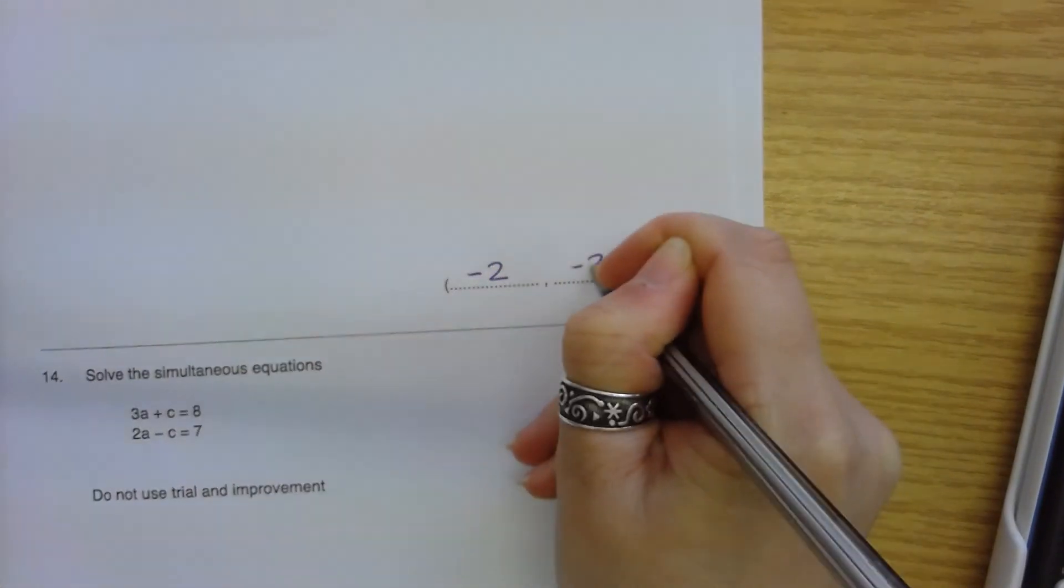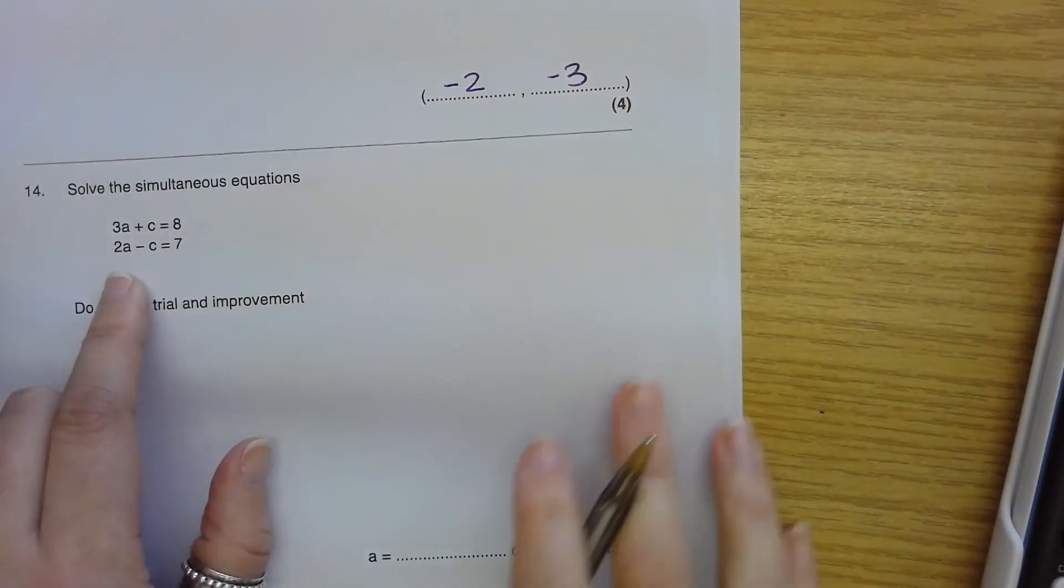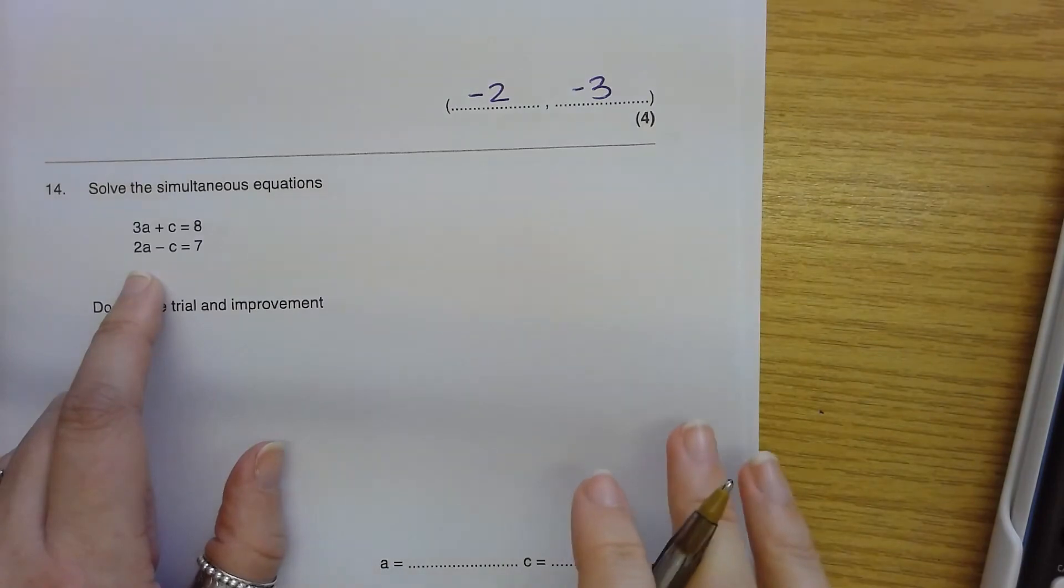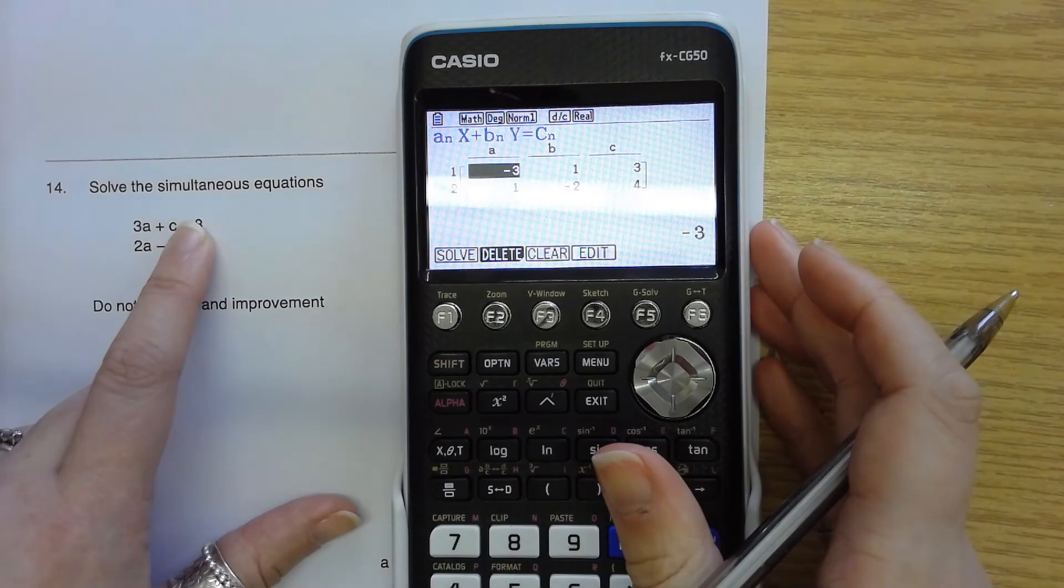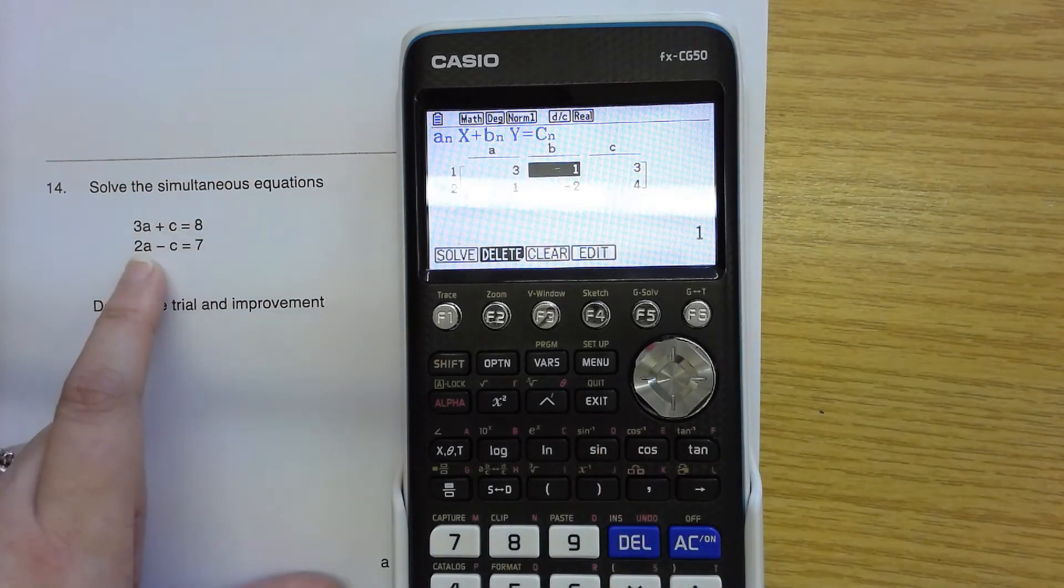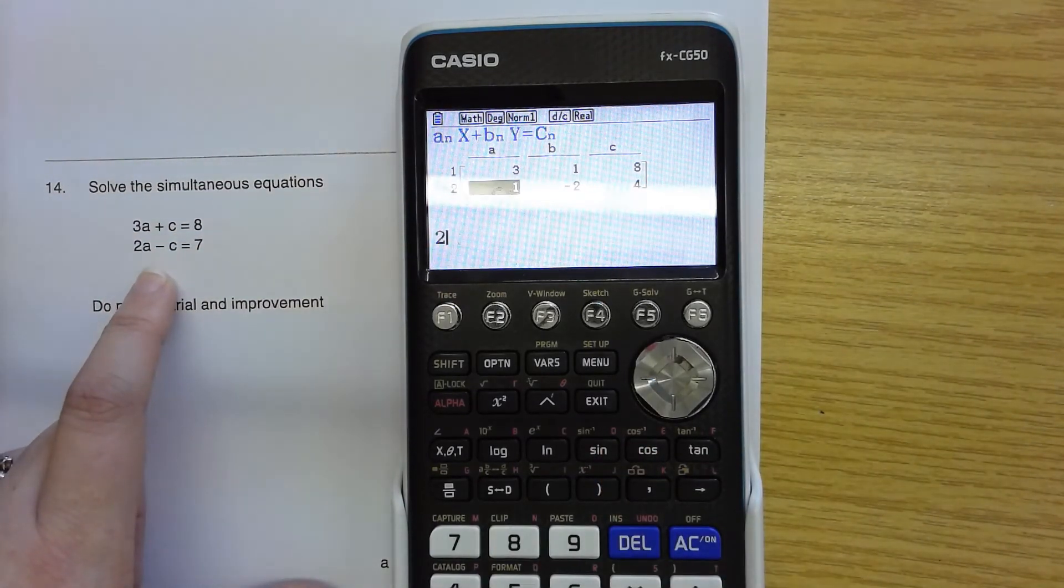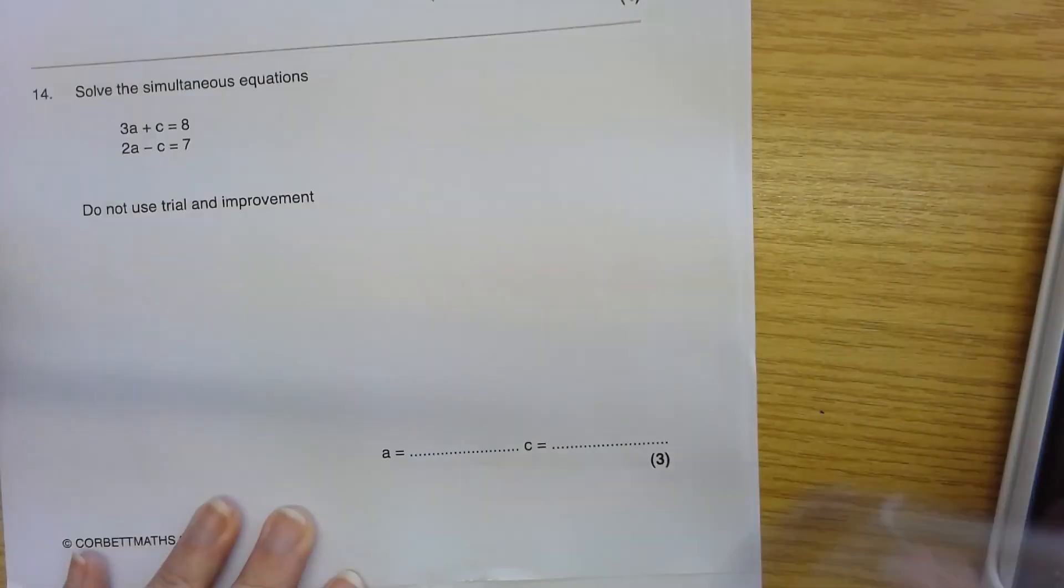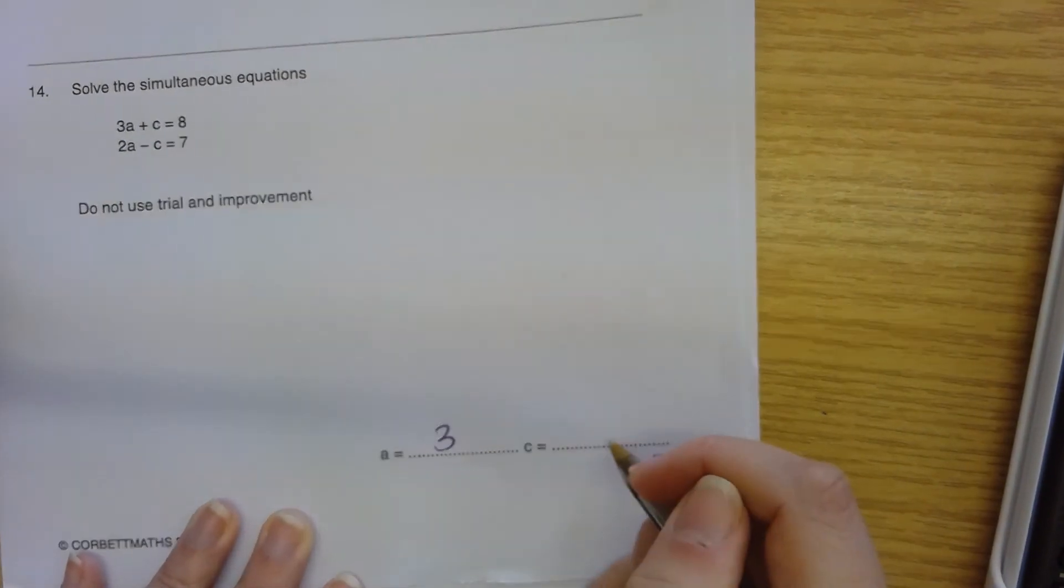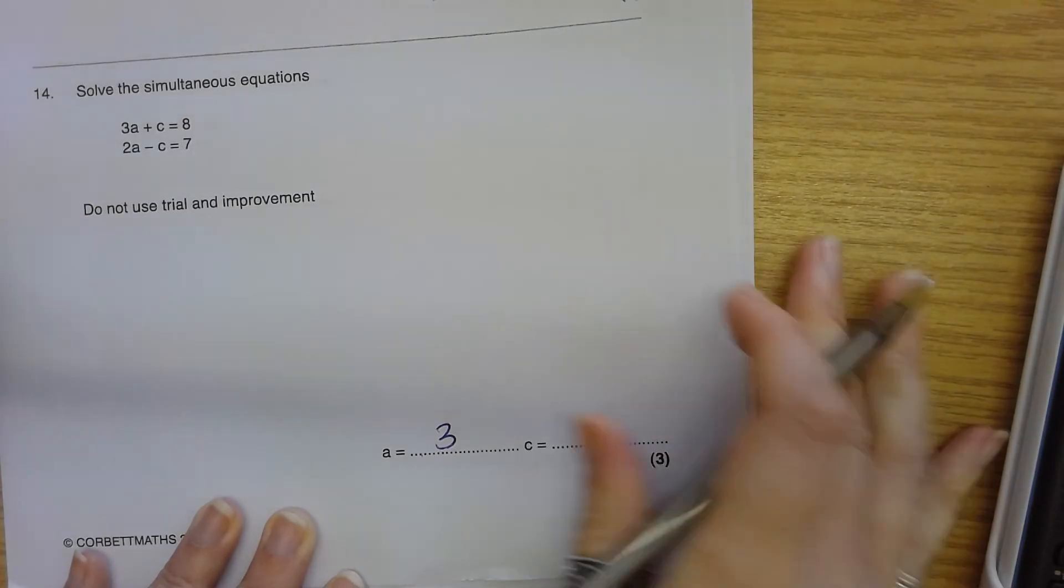So X and Y alternates. Here's A and C. It doesn't matter the letters that we use. All I would enter in is use these in my X column, these in my Y column. So 3, 1, 8, 2, negative 1, 7. Solve. And it gives me the answers 3 for A and negative 1 for C. I just need to remember which one I've done the questions in.